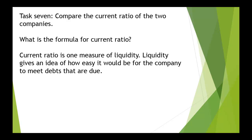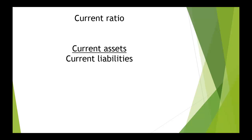Task 7 is to compare the current ratio of the two companies. We need the formula for the current ratio, which is a measure of liquidity. Liquidity is basically how easy it would be for the company to meet the debts that are due. Remember, it's only the debts that are due — so we're not talking about long-term liabilities here.